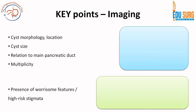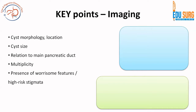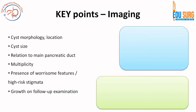You also look at multiplicity, which is common in IPMN and in syndromic cystic neoplasms. Then you look at worrisome features and high-risk stigmata, which we will see now. And if you are doing a follow-up scan, you have to look at the rate of growth on follow-up examination. These six points are very important when you are doing a report or reporting an imaging study of pancreatic cystic neoplasm.